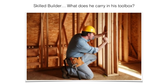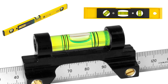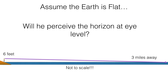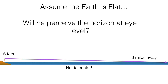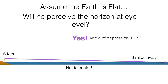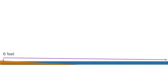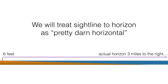Here's a question: what does a skilled builder, even somebody with decades of experience, carry in his toolbox? A level. That's because he can't trust his eye - even though he's holding the lumber inches away, he still can't trust his eye. So somebody standing at the beach, will he be able to perceive something that's different from eye level? The answer is it's going to look like it's eye level. The horizon will look like it's eye level, even though the angle of depression might be two hundredths of a degree if the earth were flat with a three mile horizon. There's that purple line, which is looking really, really pretty darn horizontal.